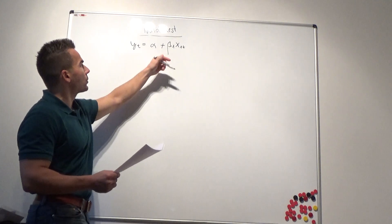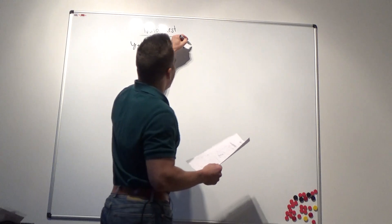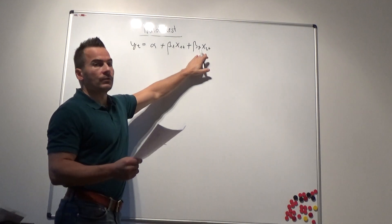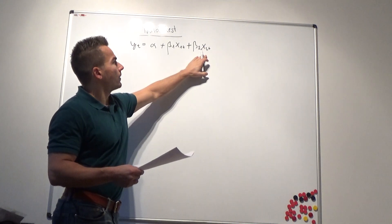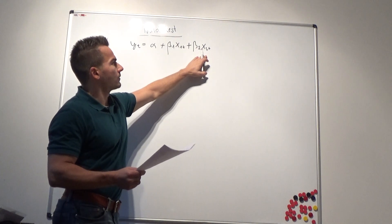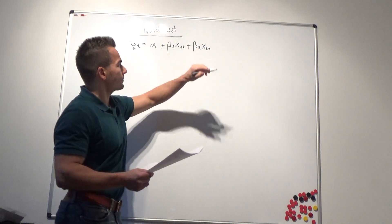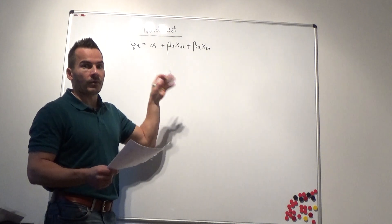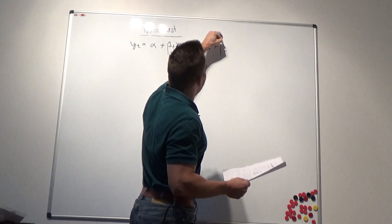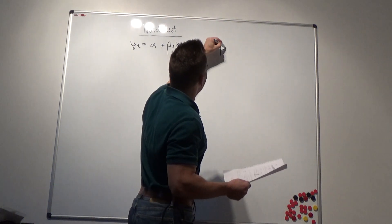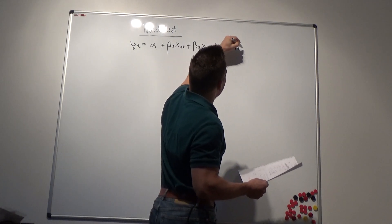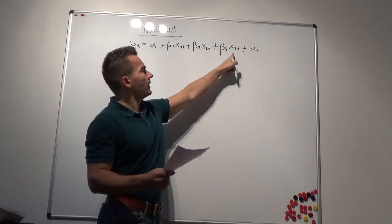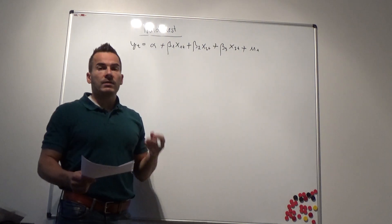Beta1 captures the exposure of our portfolio against the market factor. Then we have beta2 times x2t, where x2t is the size factor — a portfolio that is long on small stocks and short on big stocks, the Fama-French risk factor. Any zero-cost strategy is always in excess form because the risk-free rate cancels out on the long and short leg. We also have the value factor as an additional regressor: beta3 times x3t, where x3t is long on value stocks and short on growth stocks. We also add an error term ut.